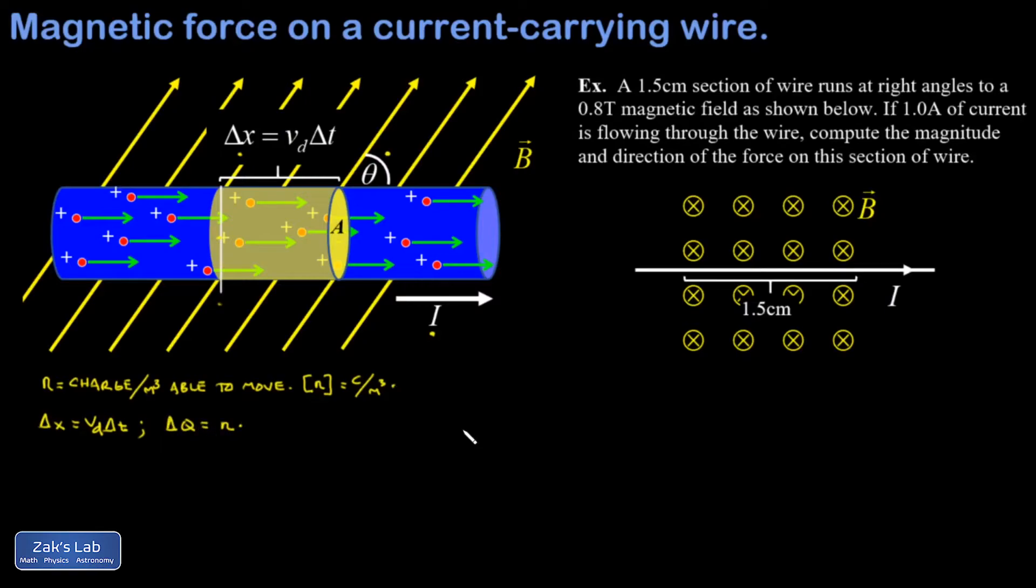Again, that little n is the charge per cubic meter, so I need how many cubic meters of charge have gone by in a time of delta T, and that's given by the volume of the cylinder, which is the area of the base times the length of the thing.